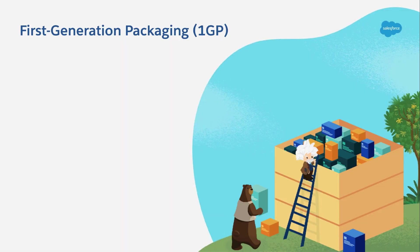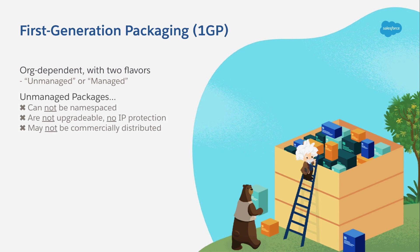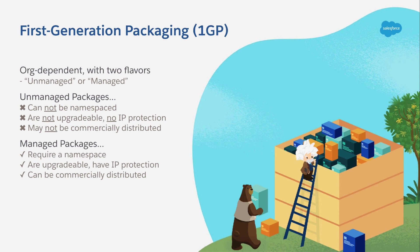A quick refresher on first-generation packaging: 1GP is an org-dependent packaging technology that can either be unmanaged or managed, and there are important differences between the two. Unmanaged packages can't be namespaced, they aren't upgradable, and they offer no IP protection. Most importantly, contractual restrictions prohibit any commercial distribution of metadata using unmanaged packages. Fortunately, that's where managed packages come in — these require a namespace, they are upgradable, and they obfuscate Apex code to protect your intellectual property.